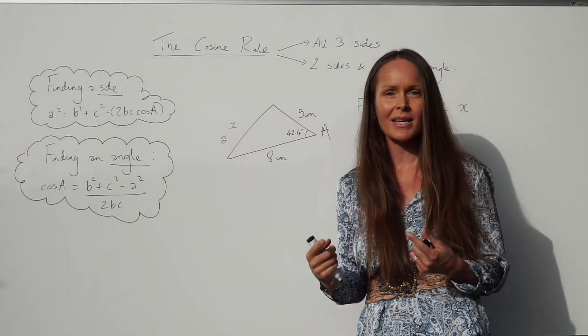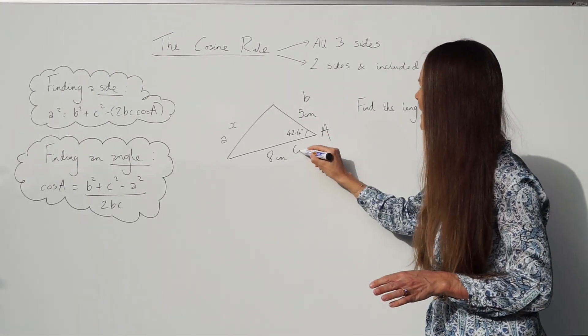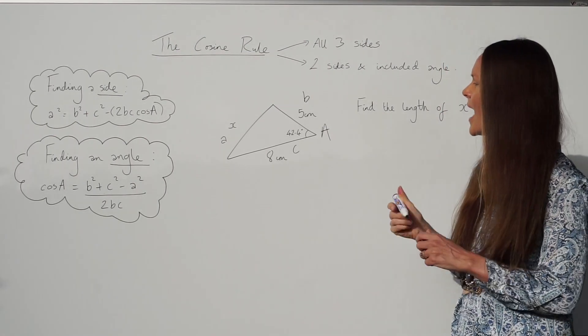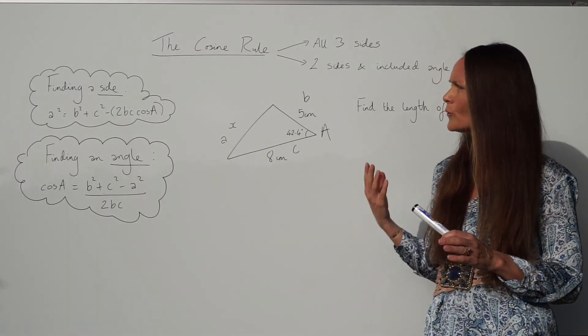Now when you label the other two sides B and C, it doesn't matter which way round you label them. So I'm going to label this one B and this one C, and now it's really easy. You just substitute into the formula.